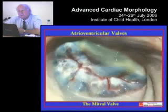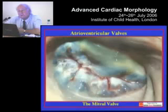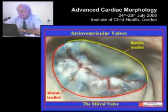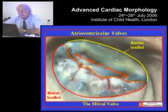And then, if all of this works properly during ventricular systole, this is what the mitral valve looks like. We're looking at it now from its atrial aspect, and you see that it is snugly closed, and that it has two leaflets. It has a mural leaflet guarding two-thirds of the overall valvar circumference, and an aortic leaflet guarding one-third.